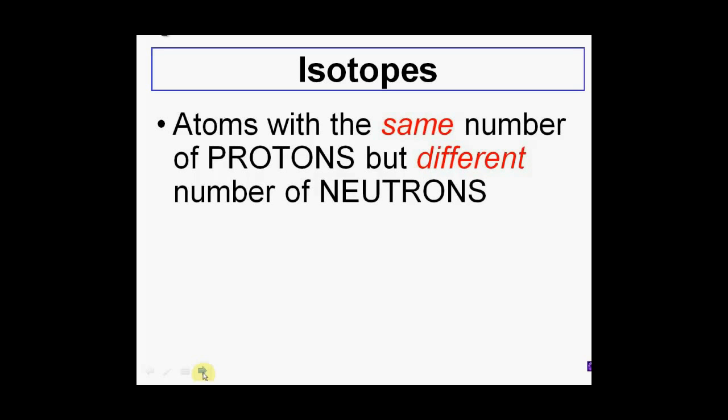A couple of key things you want to highlight here: they are atoms that have the same number of protons — so I'm talking about the same element — but they differ in the number of neutrons they have. The neutrons can vary with an element, but the protons cannot. If the protons vary, you have a different element. The proton defines the element. The number of neutrons is allowed to change, and isotopes deal with protons and neutrons.